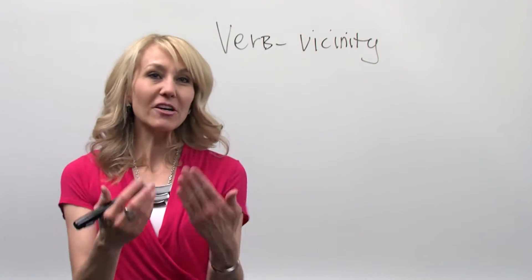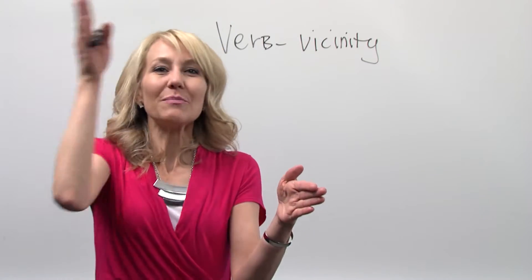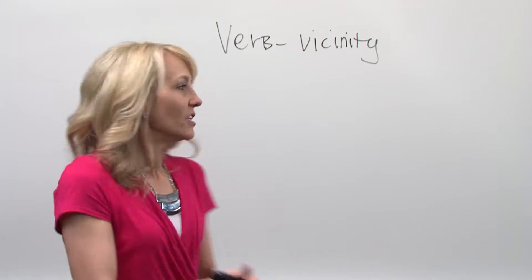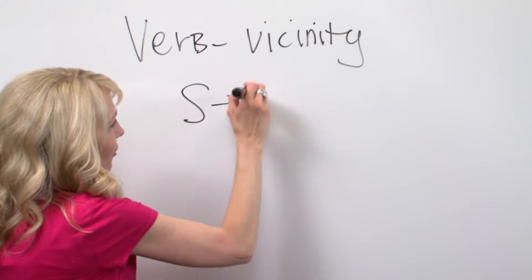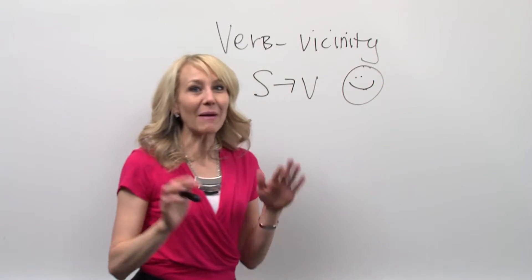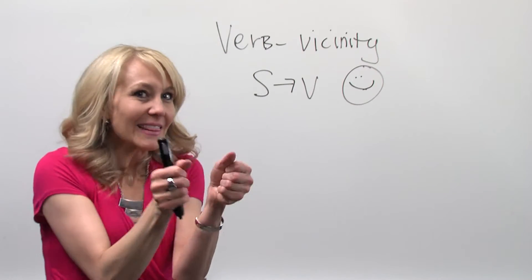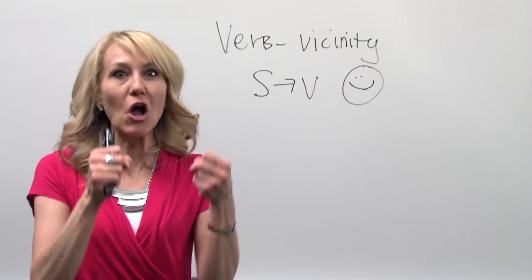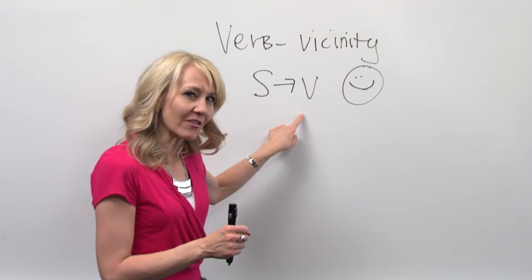Here's what we mean by this: subjects need to be close to the verbs that they are talking about. Subject, close to its verb — subjects and verbs like to be together. They want to be together because they have a good, strong relationship. So you want to keep your subjects and your verbs together.